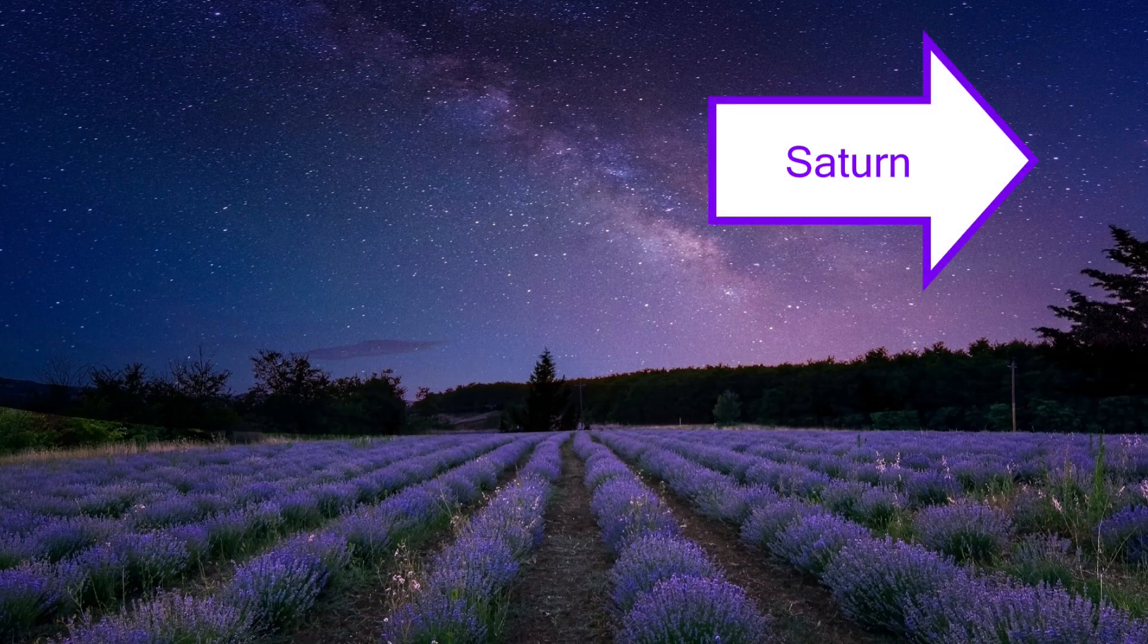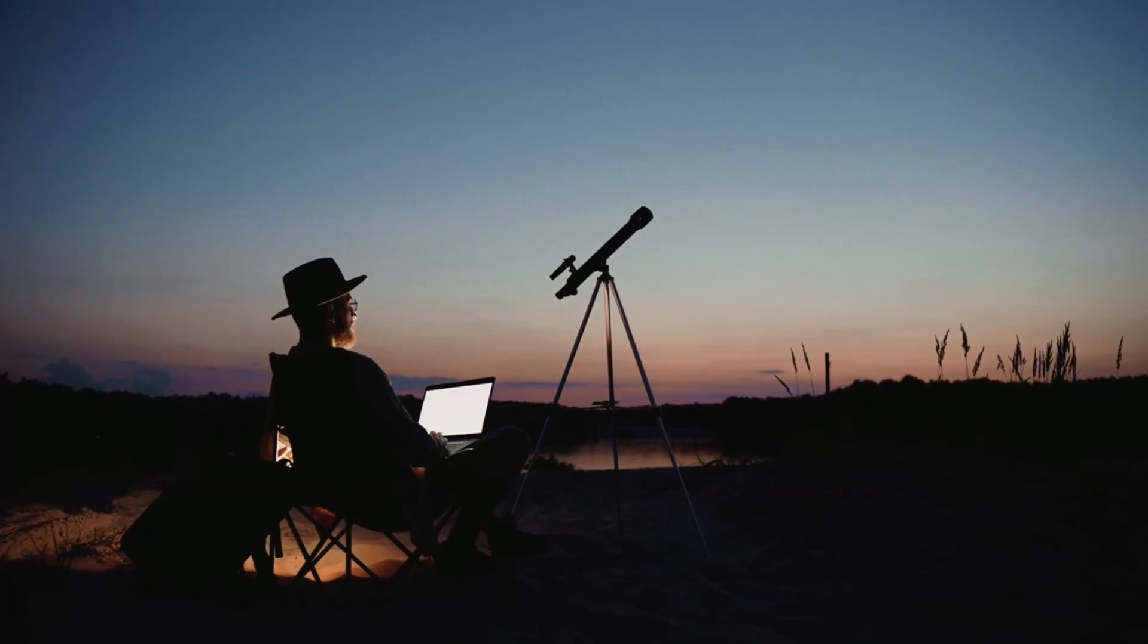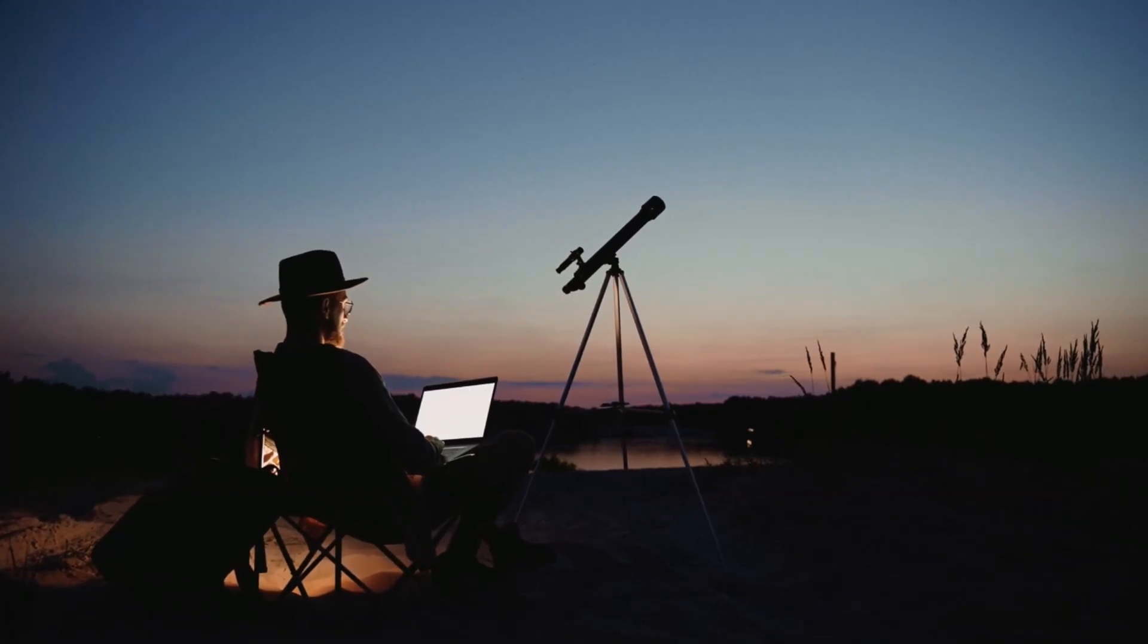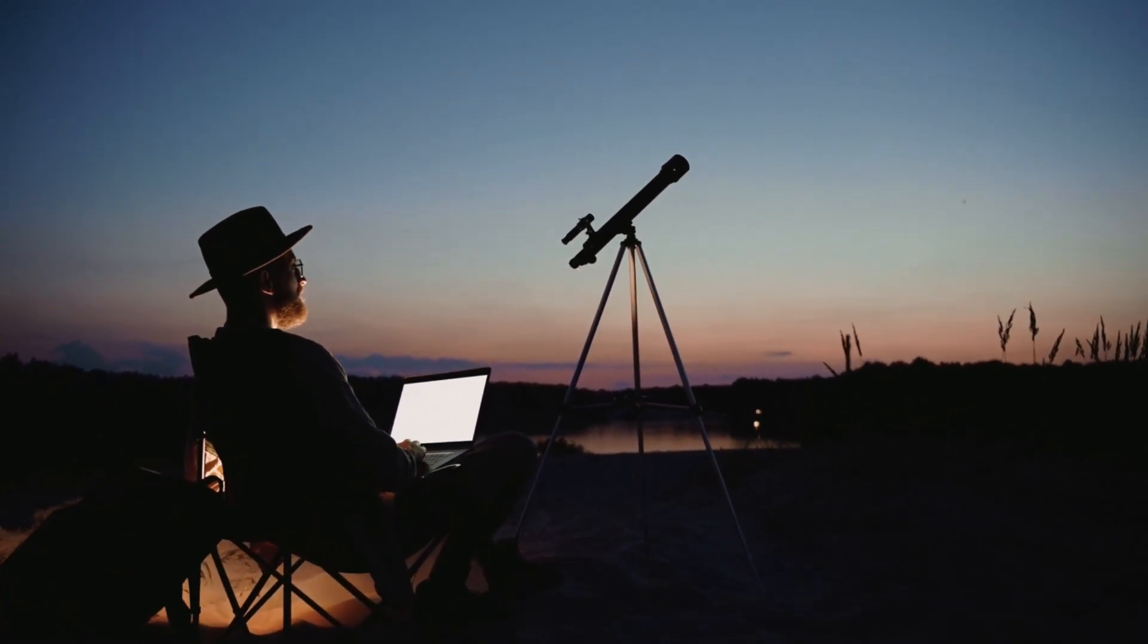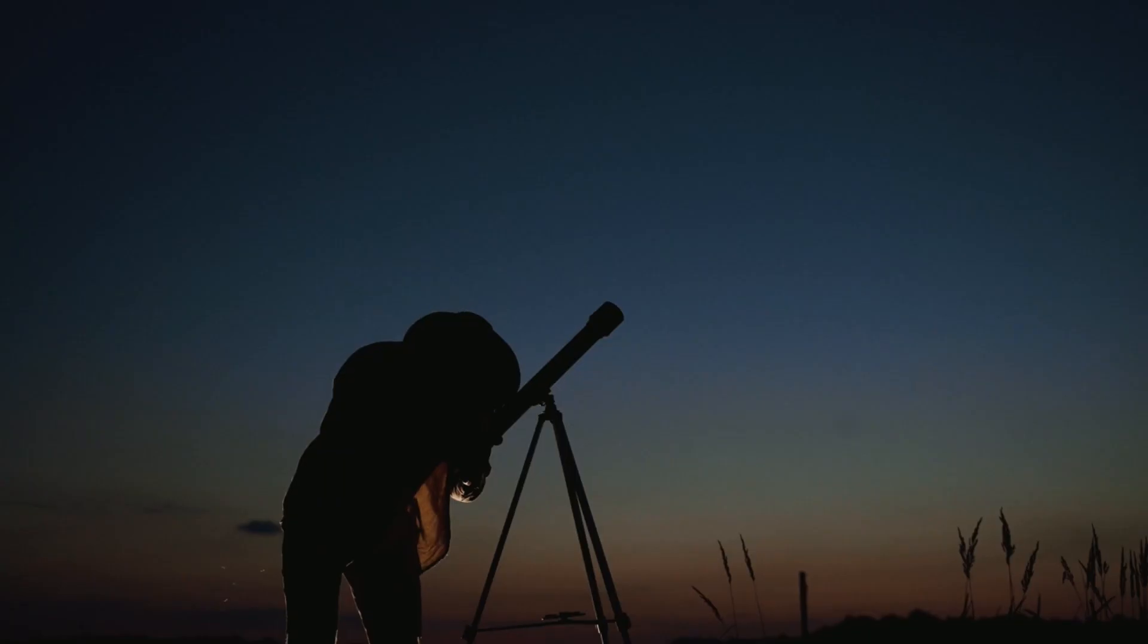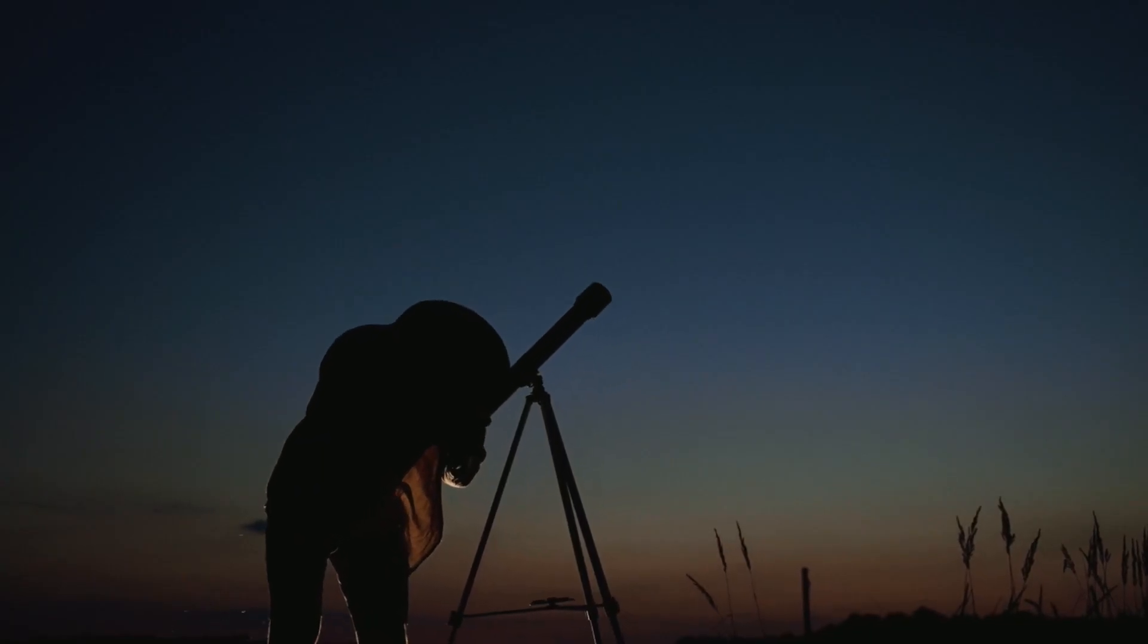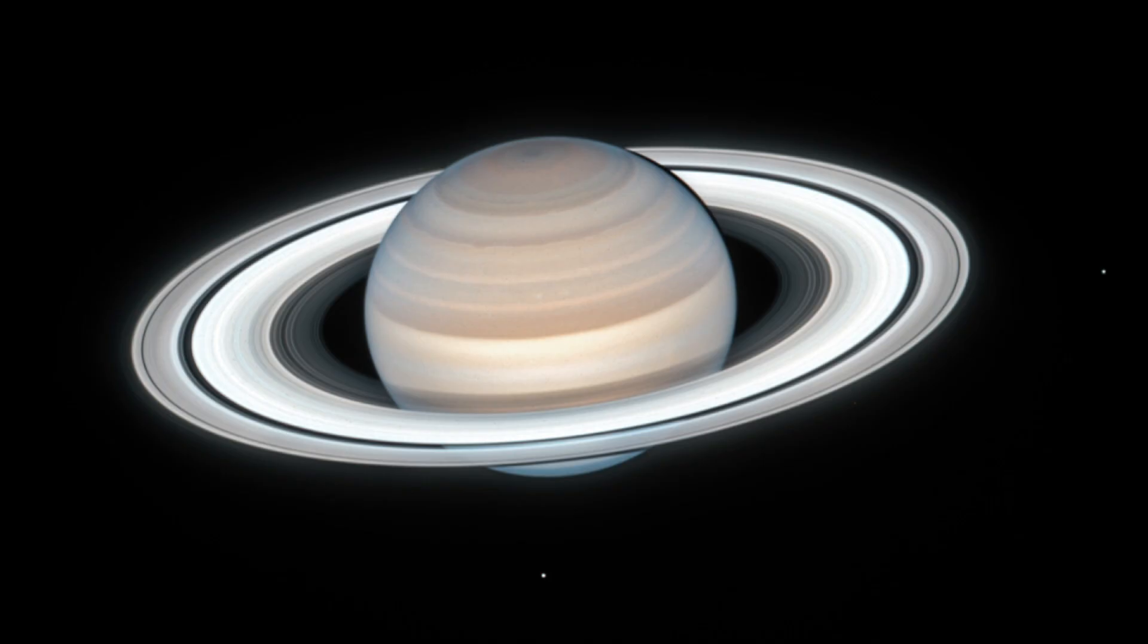This white spot looks like the planet Saturn. Saturn is very far away from Earth, so to see a bigger image of it, we can use a telescope. First, we check star charts to find out where to look in the sky, and then we look through the telescope. Depending on how powerful the telescope is, we can then see pictures like this one taken by the Hubble telescope.